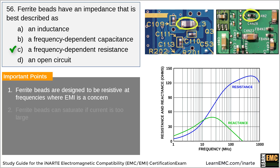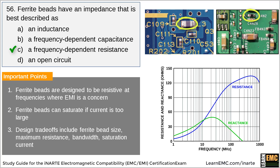Like inductors with ferrite cores, ferrite beads can saturate if the current exceeds the specified maximum. Saturated beads lose their resistive properties, so it's important to choose beads that can handle the current in this specific application. There are tradeoffs associated with the ferrite bead's size, maximum resistance, bandwidth, and saturation current.